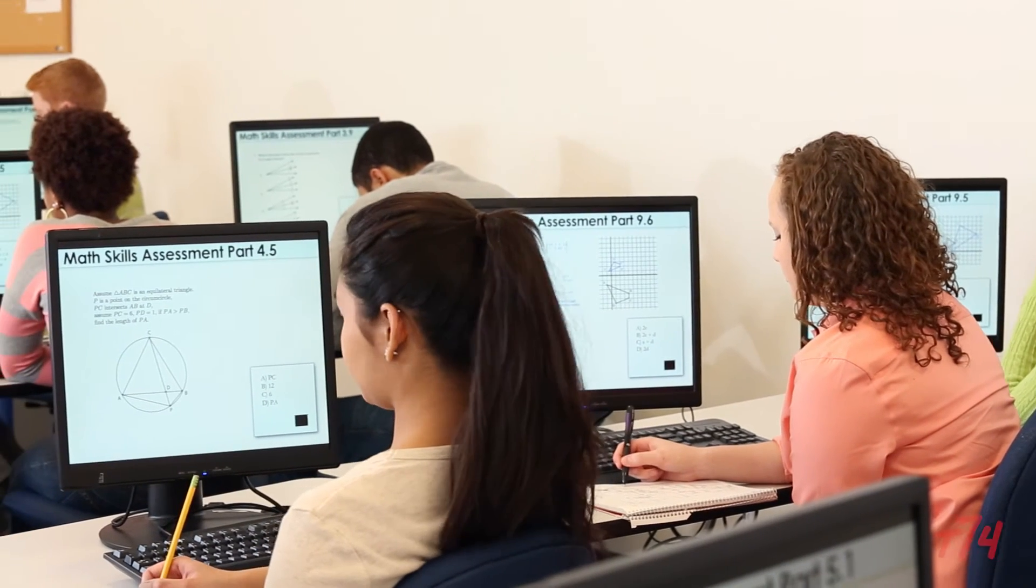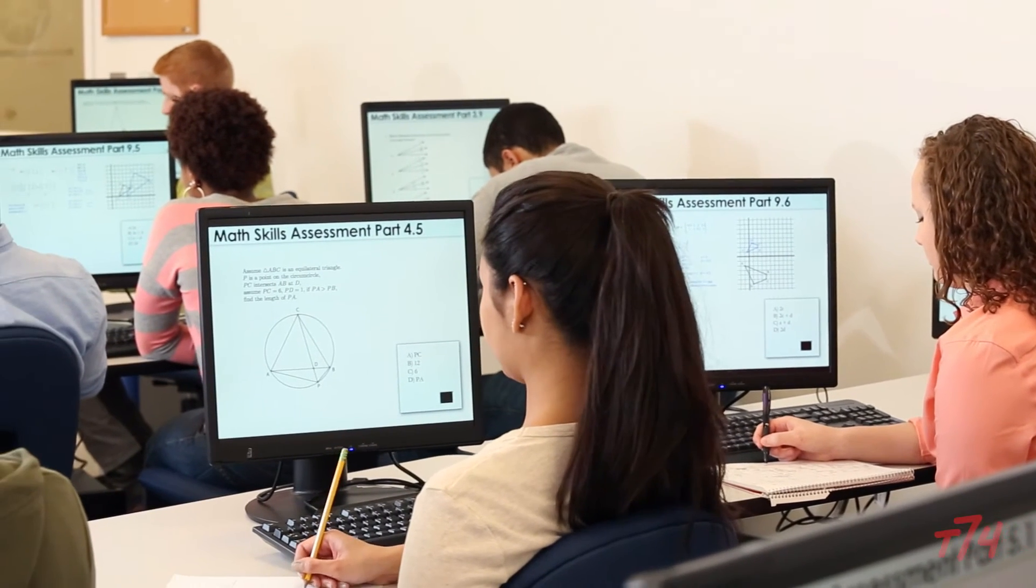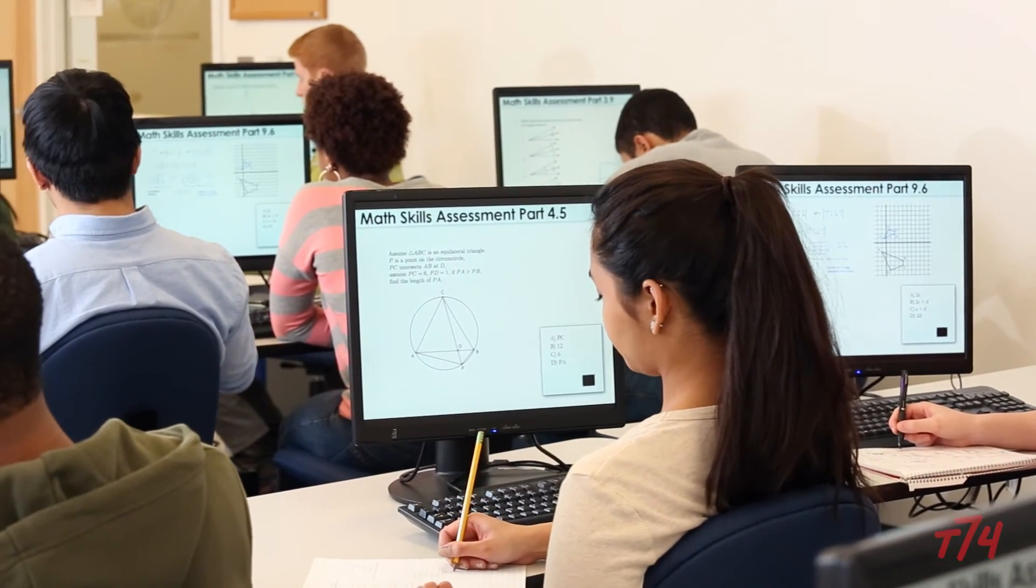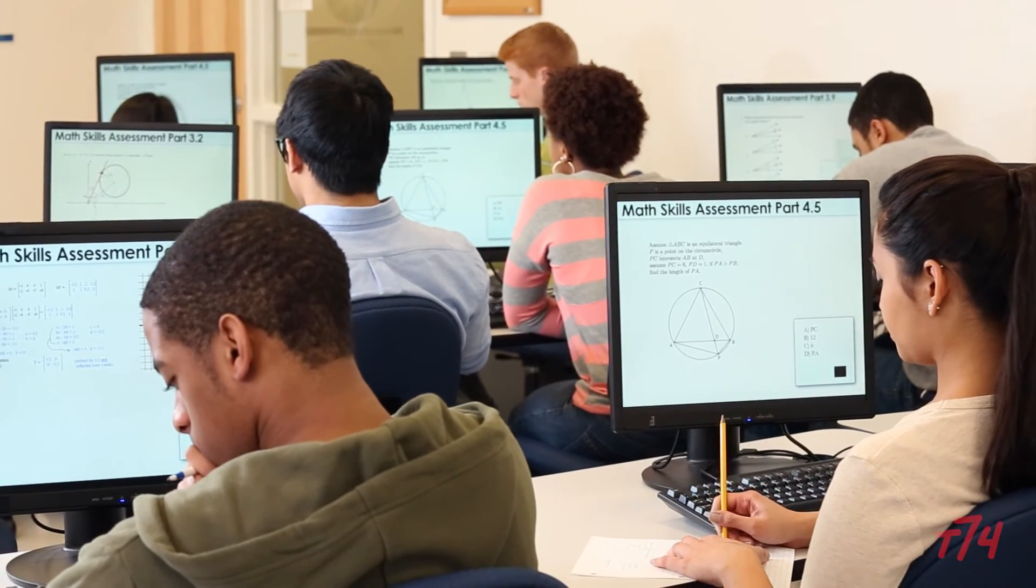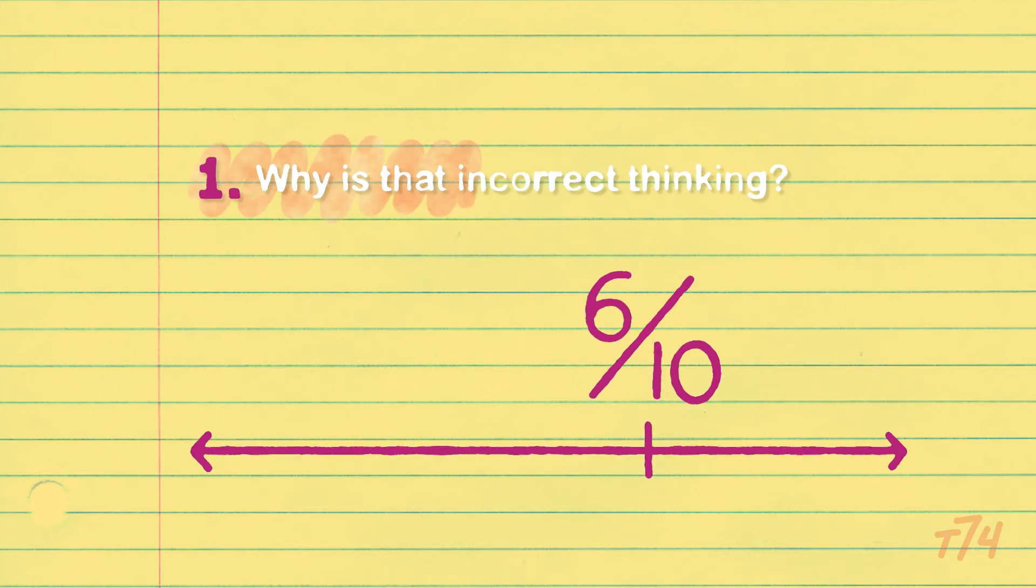So on the PARC test, we want kids not only to give us the right answer, but we also want them to have practice with flawed reasoning examples. What is that incorrect thinking?